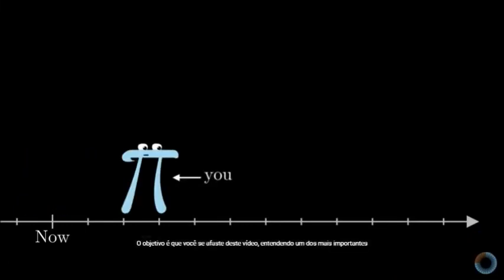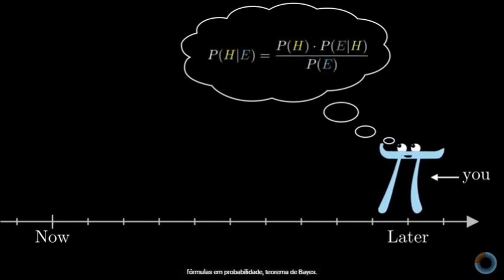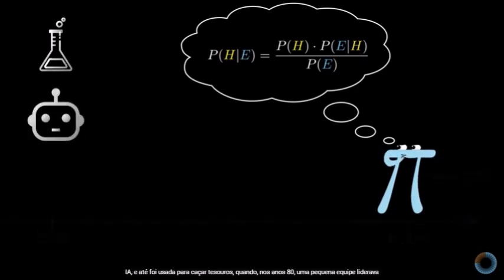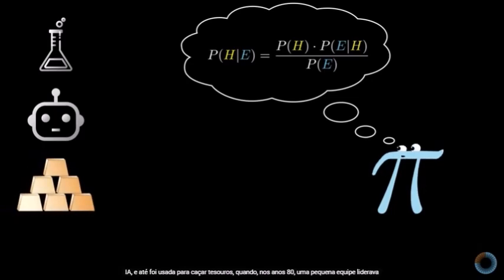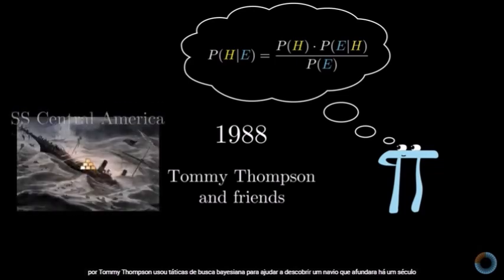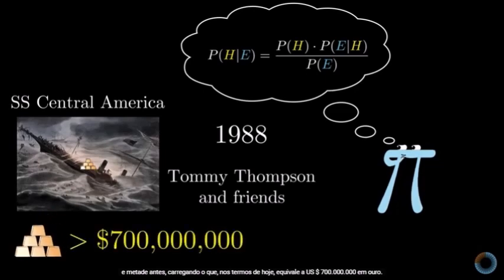The goal is for you to come away from this video understanding one of the most important formulas in all of probability: Bayes' theorem. This formula is central to scientific discovery, it's a core tool in machine learning and AI, and it's even been used for treasure hunting — when in the 1980s a small team led by Tommy Thompson used Bayesian search tactics to help uncover a ship that had sunk a century and a half earlier, carrying what, in today's terms, amounts to $700 million worth of gold.